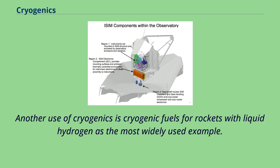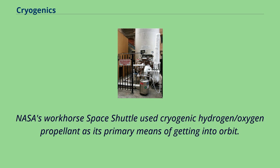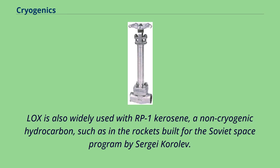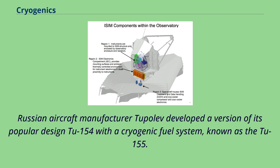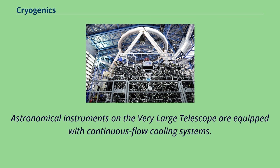Another use of cryogenics is cryogenic fuels for rockets, with liquid hydrogen being the most widely used example. Liquid oxygen is even more widely used but as an oxidizer, not a fuel. NASA's Space Shuttle used cryogenic hydrogen/oxygen propellant as its primary means of getting into orbit. LOX is also widely used with RP-1 kerosene, a non-cryogenic hydrocarbon, such as in the rockets built for the Soviet space program by Sergei Korolev.